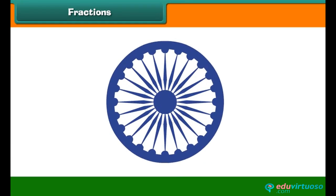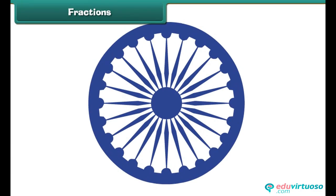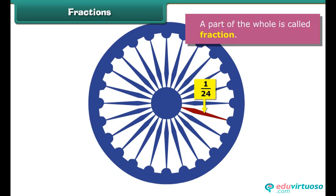Consider the Ashok Chakra. It has twenty-four spokes. The spokes divide the wheel into twenty-four equal parts. Each part is one by twenty-fourth of the whole wheel. A part of the whole is called a fraction.